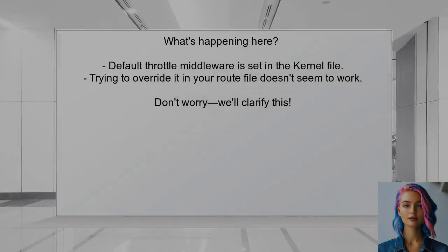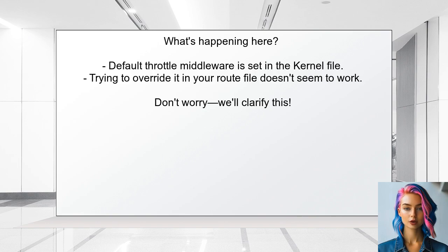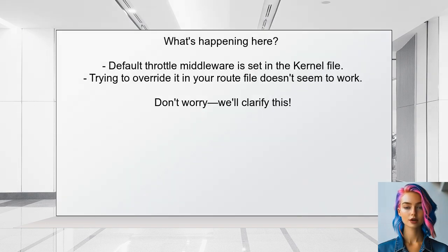So what's happening here? The default throttle middleware is set in the kernel file, and when you try to override it in your route file, it doesn't seem to work. This can be confusing, but don't worry, we'll clarify this.